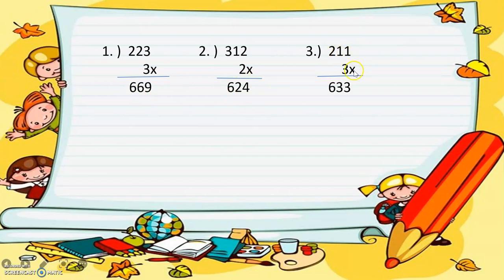Two hundred eleven times 3. Three times 1 equals 3, 3 times 1 equals 3, 3 times 2 equals 6. Very easy, right? So this is the multiplicand, this is the multiplier, and this is the product. The product is 633.